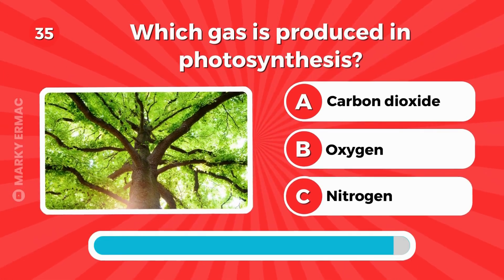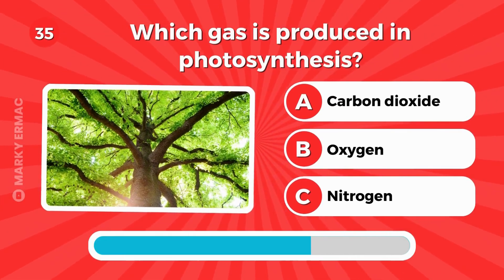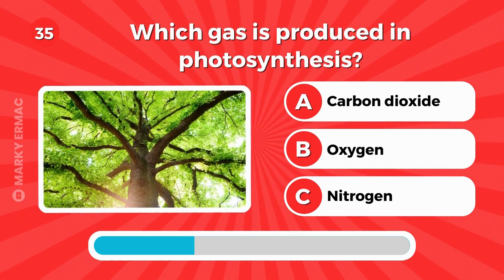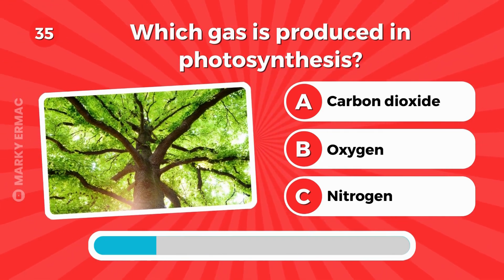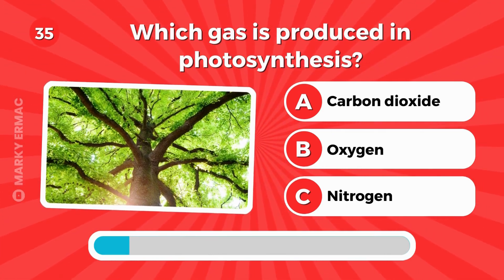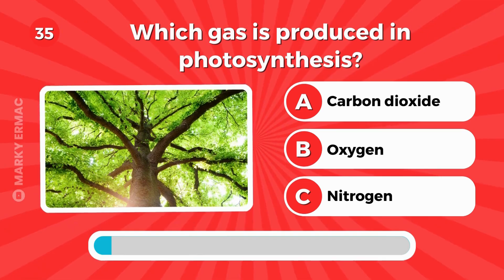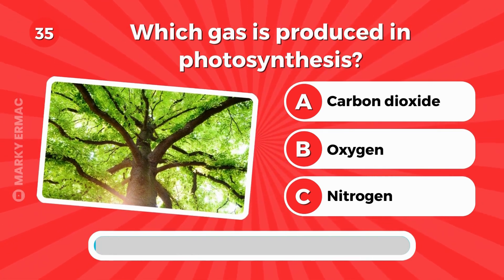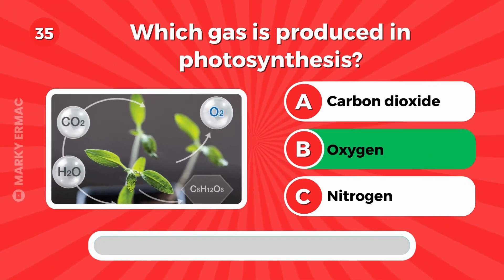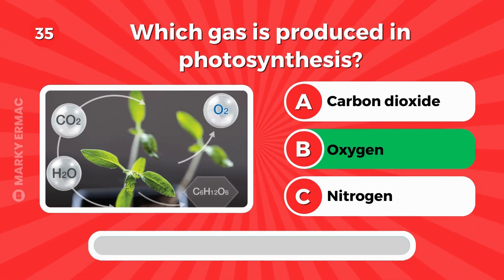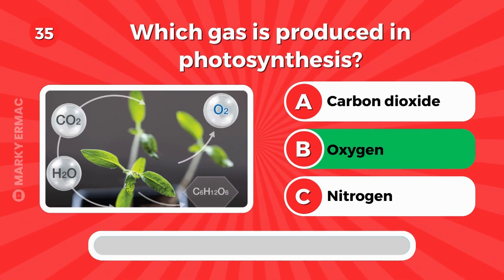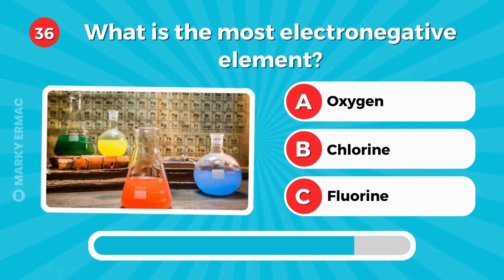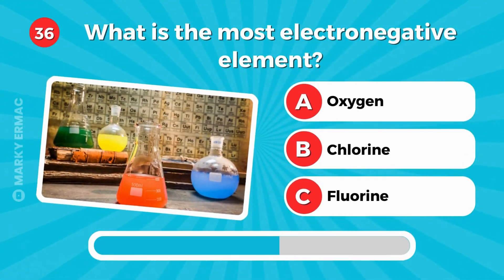Which gas is produced in photosynthesis? Carbon dioxide, oxygen, or nitrogen? It's oxygen. What is the most electronegative element?